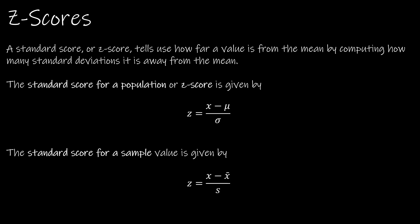So what is a z-score? A z-score, which you'll sometimes see referred to as a standard score, tells us how far a value is from the mean by computing how many standard deviations it is from the mean. That's the key — how many standard deviations it is away from the mean. A z-score tells us the number of standard deviations to the left or right of the mean.